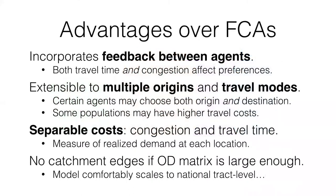Advantages over FCAs: it incorporates feedback between agents, it's extensible to multiple origins and travel modes, certain agents can choose both origin and destination. The costs are separable between congestion cost and travel time. In rural areas there's a high travel cost and we want to see if it's also congestion. Crucially, it's done efficiently enough that we can compute travel time matrices for the entire US at tract level quickly on a laptop within a minute or so.